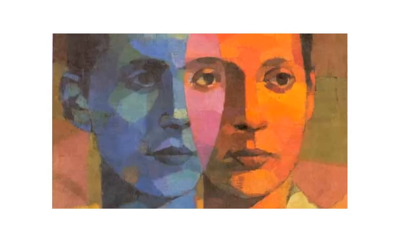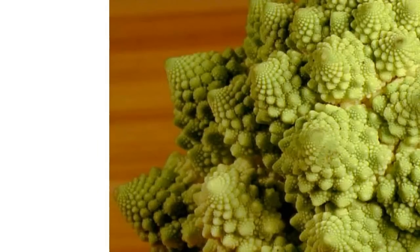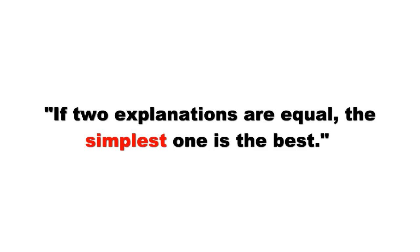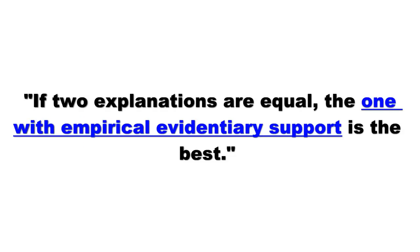Simplicity, after all, is a largely subjective quality, and our preference for simplicity is not necessarily reflected in nature. So is the razor worthless in these situations? Not entirely. What is needed is an objective measurement to stand in for simplicity, which is a purely subjective concept. I would propose empirical evidence — another way of saying testability. My own version of the razor would read: if two explanations are equal, the one with empirical evidentiary support is best.